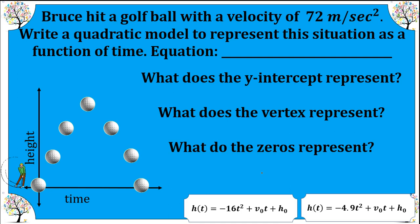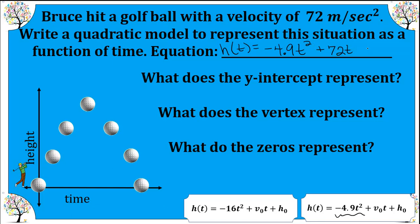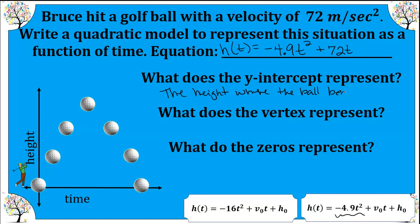Let's take a look at another example of a projectile being launched, but this time it's being launched from the ground, so our initial height is going to be zero and we won't have a constant in our equation. Bruce hit a golf ball with a velocity of 72 meters per second, so we're going to use the formula with negative 4.9. Our height at any given second is negative 4.9 times t squared plus 72 times t, and our initial value is zero. The y-intercept represents the height where the ball begins — it starts on the ground.